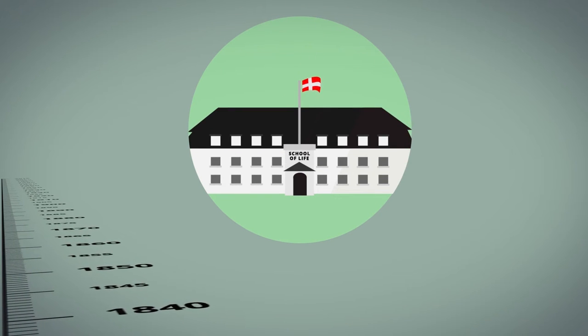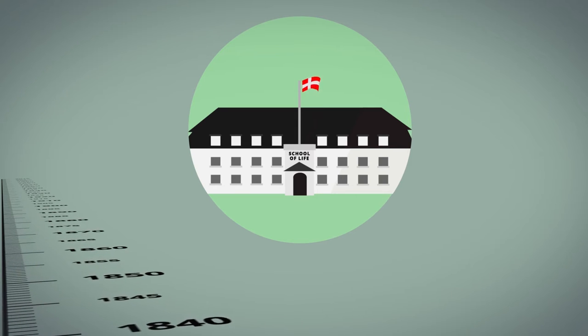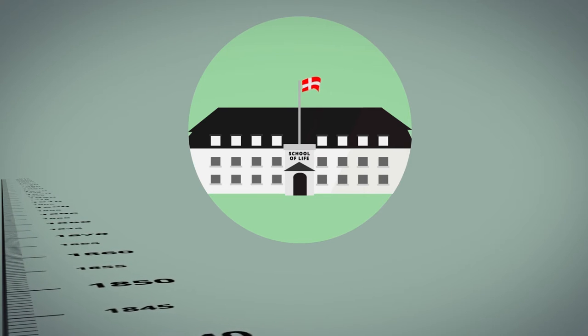The first folk high school in Denmark was founded in Rødding in 1844 and was, after the Danish defeat to Germany in 1864, moved to Askov as a folk high school.